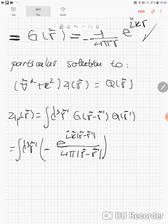Here it is 2m divided by h bar squared. This is V of R prime times Psi of R prime.